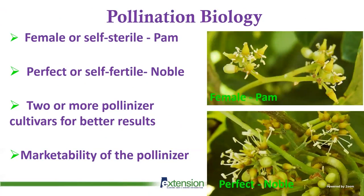When planning to grow muscadine cultivars, one important consideration is their pollination biology. Unlike Vitis vinifera and American or French-American hybrid bunch grapes, muscadines often require a pollinizer because not all cultivars are self-fertile. In production, there are two types based on pollination biology: some are considered female or self-sterile — you can look at the picture of Pam here, which is self-sterile. Regrettably, most of the large-berry cultivars of muscadines are self-sterile and require a pollinizer for successful production.